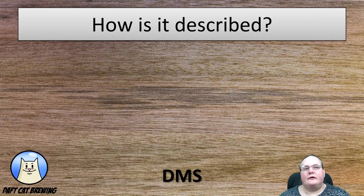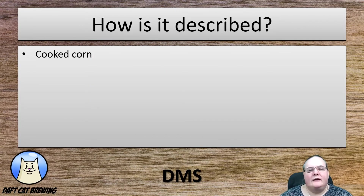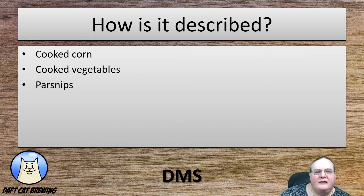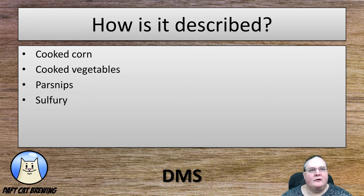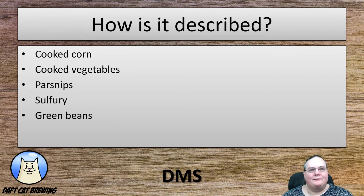DMS, or dimethyl sulfide — how is that described? Normally you'll hear people talking about a cooked corn, cooked vegetable, parsnip-y, sulfur, or green beans type aroma, smell or flavor from the beer.